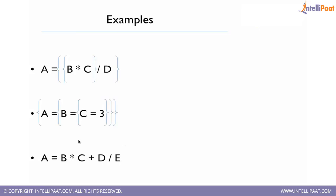So the operation proceeds as follows: first D / E is calculated, then B * C is calculated, and then the results of both are added and assigned to A.